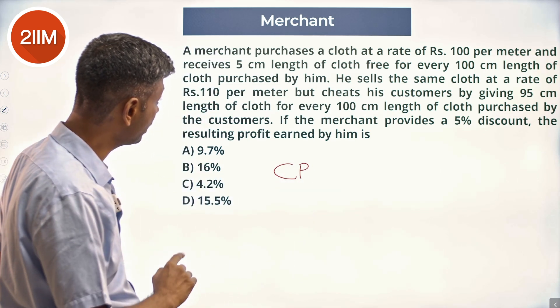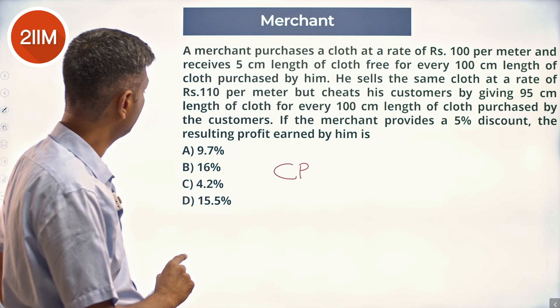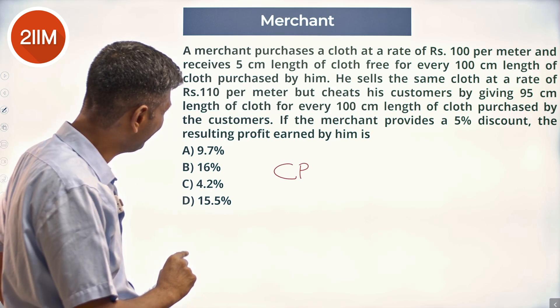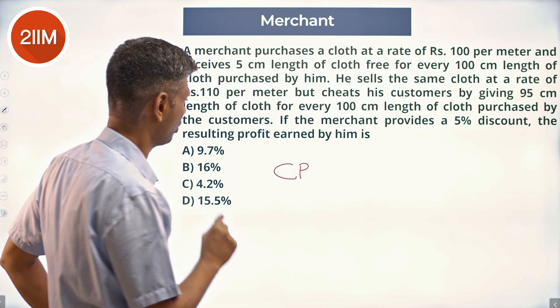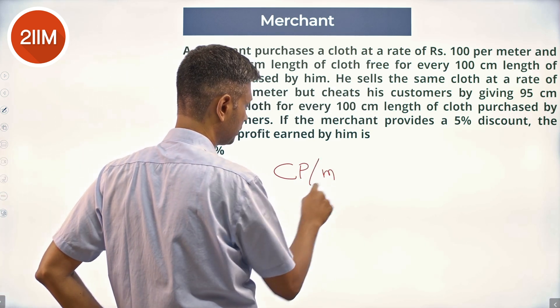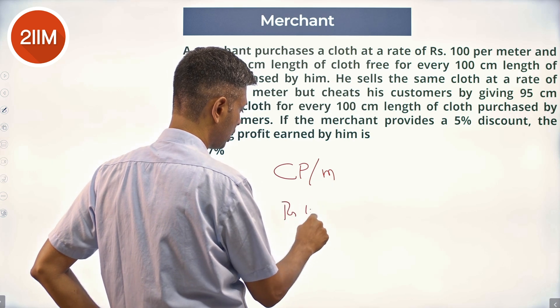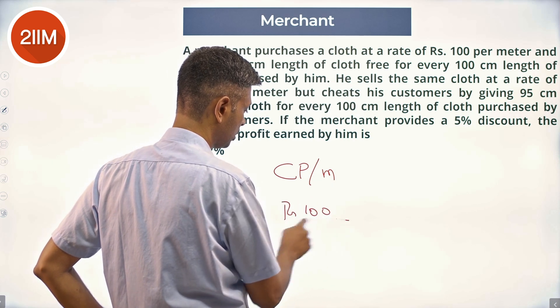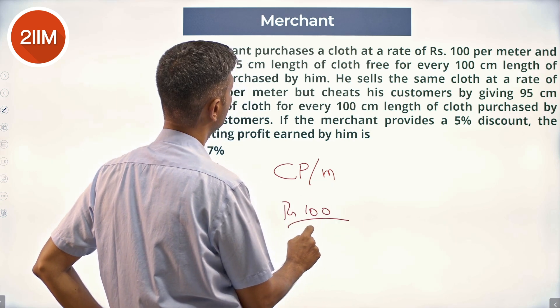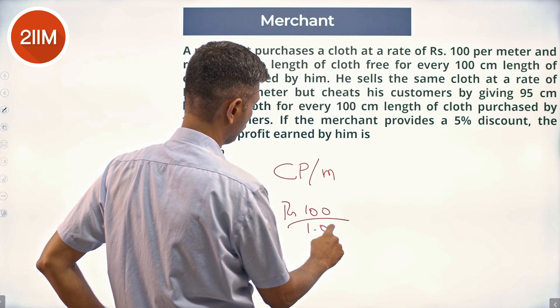He buys at hundred per meter, but he gets five centimeters extra. So cost price per meter is rupees hundred divided by 1.05.